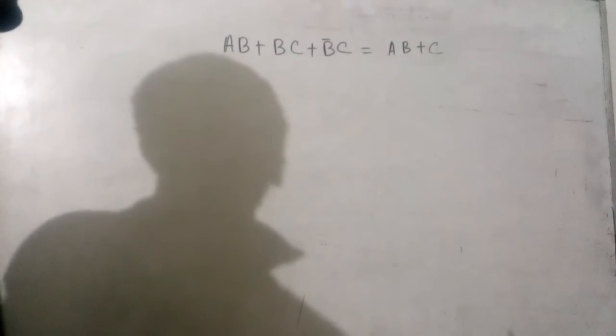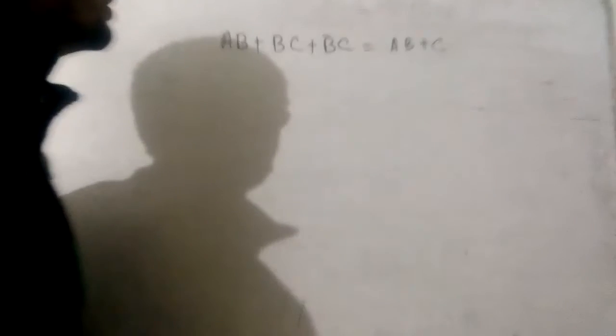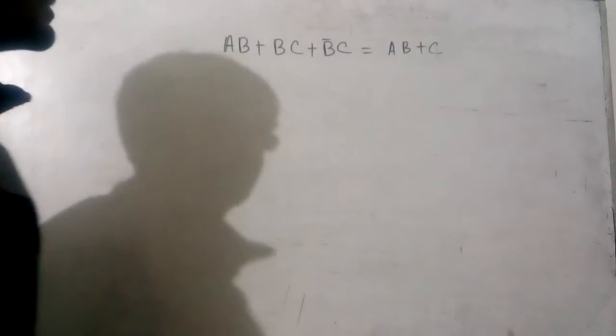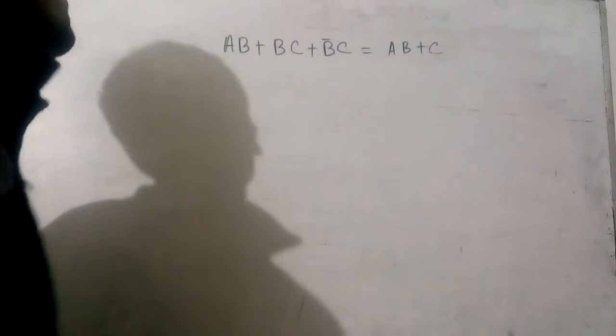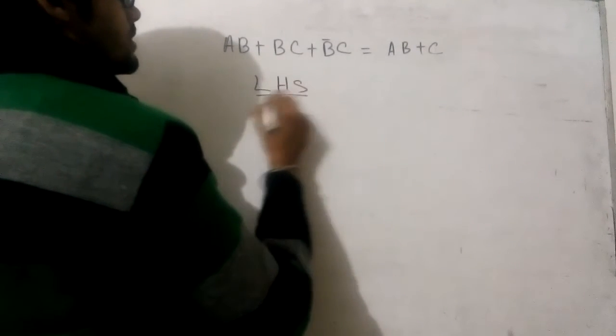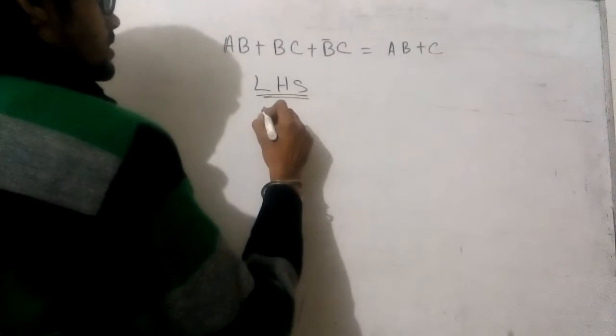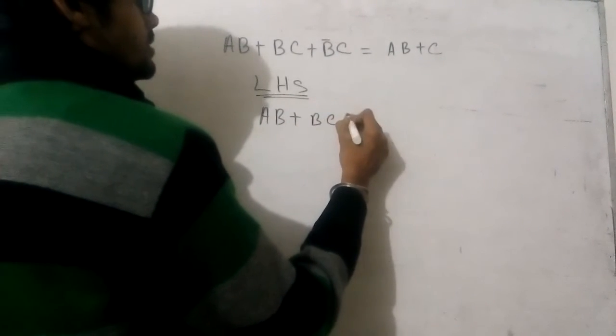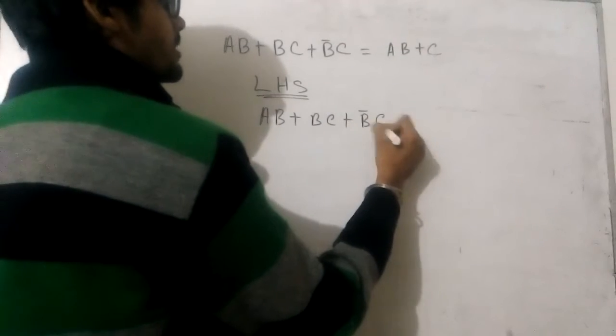We will prove now LHS versus RHS. We have to solve it by using our Boolean logics, Boolean formulas. LHS: AB plus BC plus B bar C.